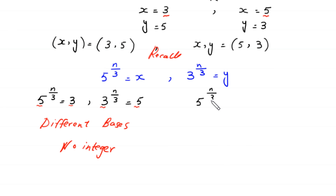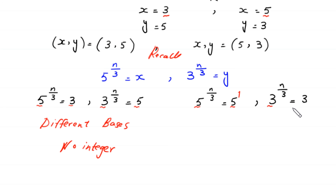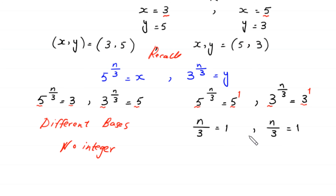Now we put x = 5 and y = 3: 5^(n/3) = 5 and 3^(n/3) = 3. The bases match on both sides. Since 5 = 5^1 and 3 = 3^1, we get n/3 = 1 from both equations, giving n = 3. This is the final answer.